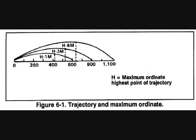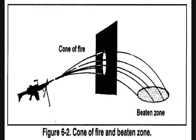The maximum ordinate increases as the range increases, so if you move the beaten zone further ahead, you move your maximum ordinate higher off the ground. At 600 meters, the maximum ordinate of the M249 machine gun is one meter high. If any midgets are standing between you and your 600-meter target, they're in for a big surprise.